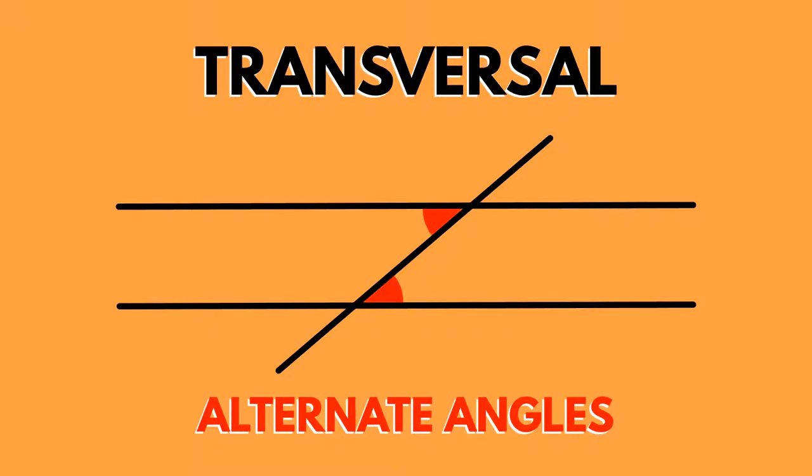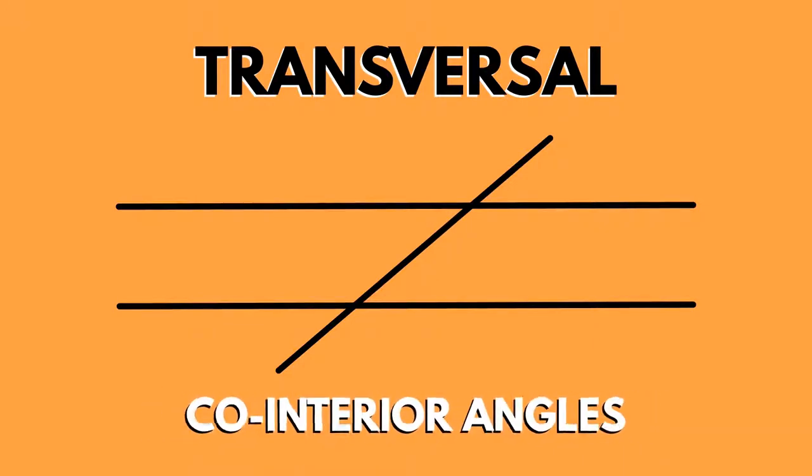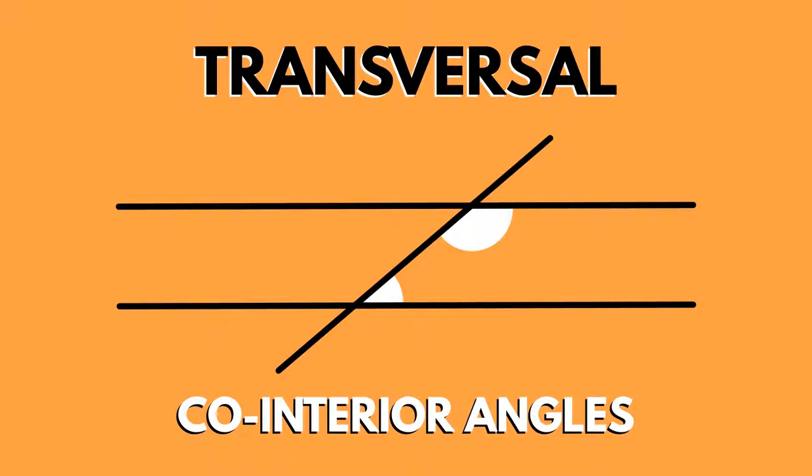Alternate angles are on opposite sides of a transversal. Co-interior angles are those between the parallel lines with both being on the same side of the transversal.